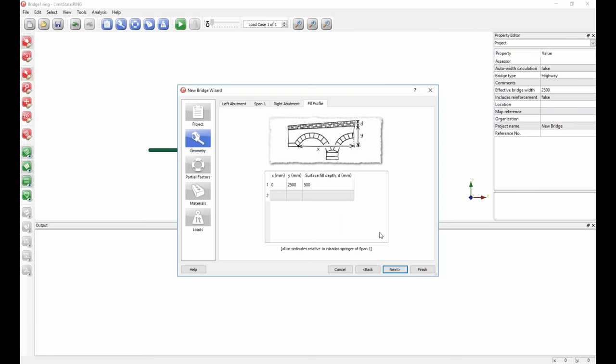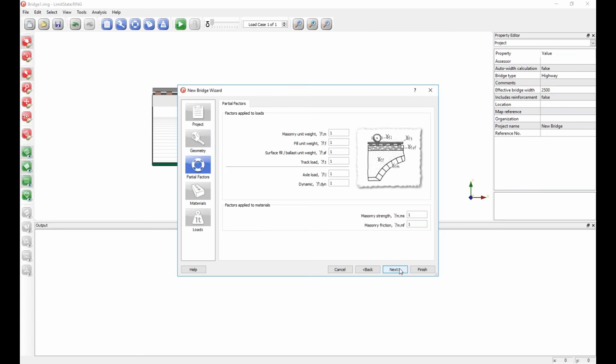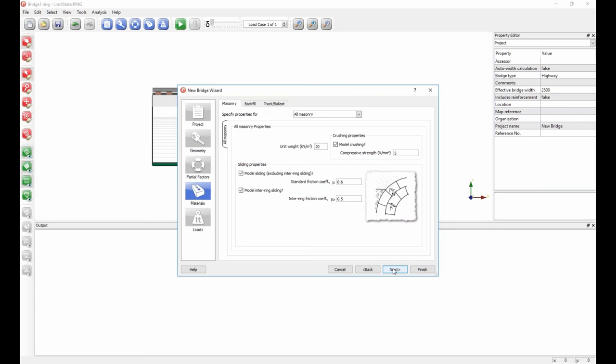Move on to the fill profile. We can specify backfill height, and also we can specify a surface fill depth, which in the case of a railway bridge corresponds to the ballast and sleeper region. Partial factors, at the moment they're all unity, but you can enter the parameters that are applicable to the assessment code that you are working with. So you can specify different factors on track load, axle load, dynamic factor, and so forth in this section. But for now, I'm just going to keep things simple again and keep those as unity.